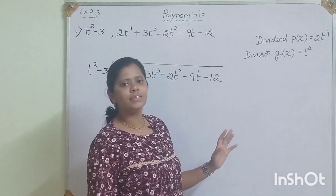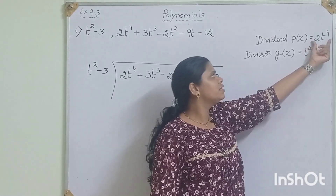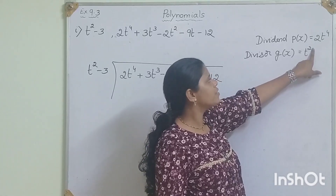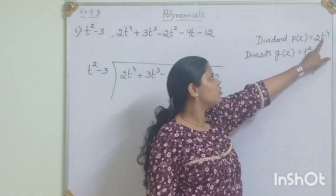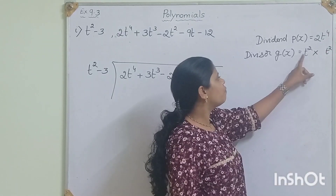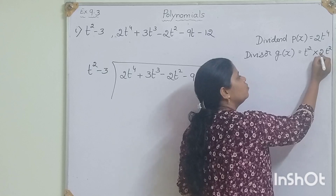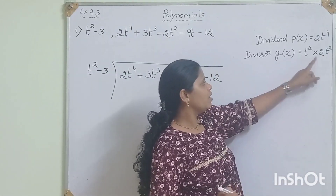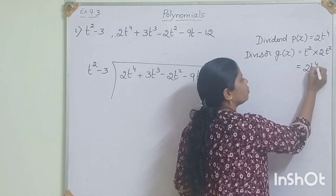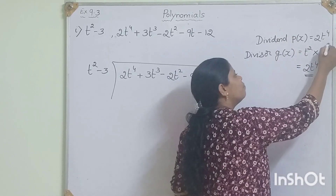Our question is: which number or variable do we have to multiply here to get 2t⁴ as the answer? t⁴ is there in the dividend and t² is in the divisor. To get t⁴, we multiply t². But here the coefficient is 1, and we need 2, so we multiply by 2t². For this t squared, if I multiply 2t squared, we will get 2t to the power of 4.